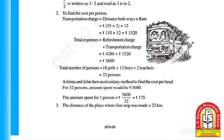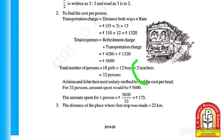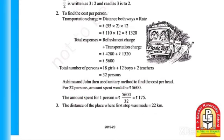Total number of persons = 18 girls + 12 boys + 2 teachers = 32 persons. Using the unitary method: for 32 persons, total amount spent = ₹5600. So the amount spent per person = 5600 ÷ 32 = ₹175. In this way we can find the cost per head for the picnic.